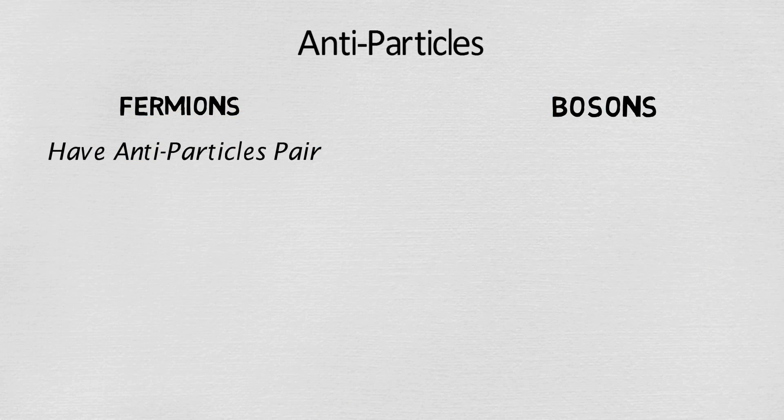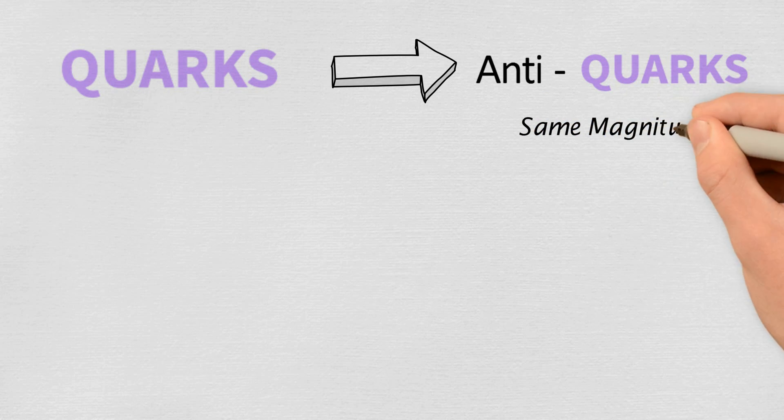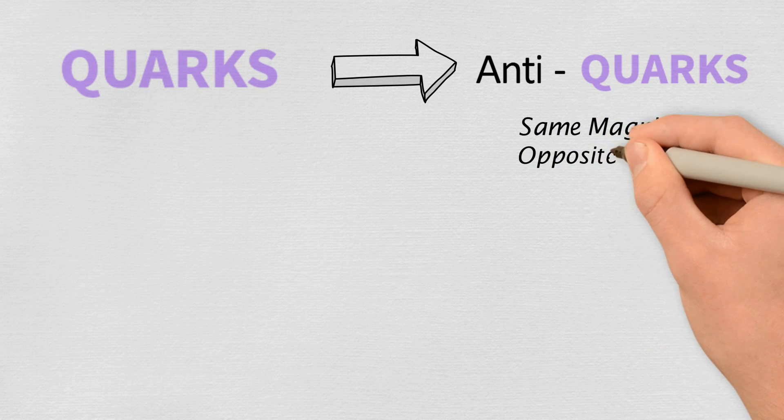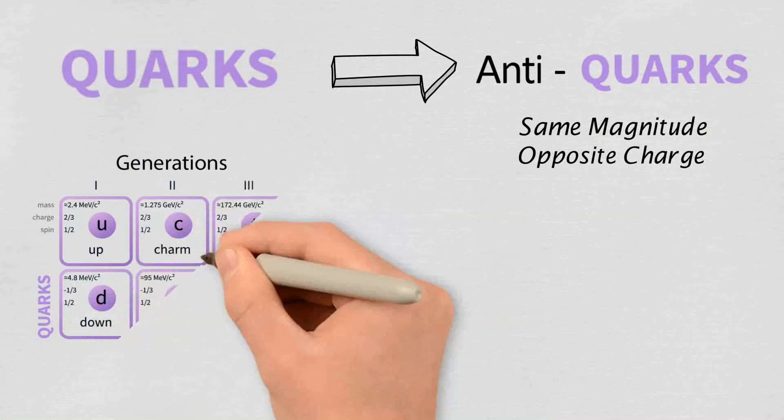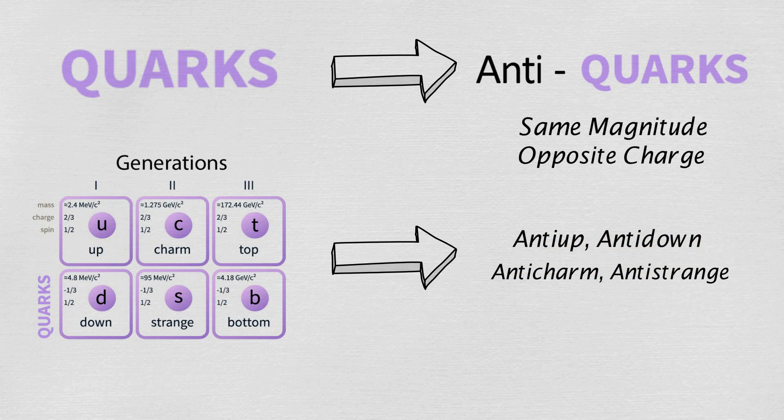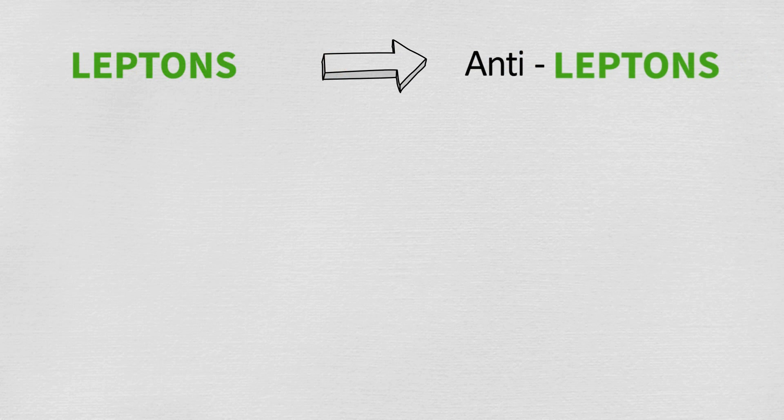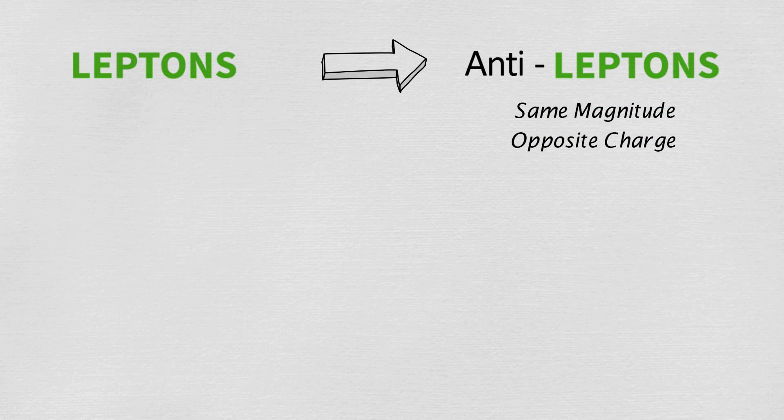At last, there are antiparticles. Only fermions have antiparticles. Bosons either don't have antiparticles or they are their own antiparticles. Antiparticles of quarks are called anti-quarks. Antiparticles of leptons are called antileptons.